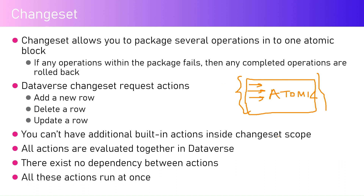You can't have additional built-in actions inside the Change Set scope — all actions are evaluated together in Dataverse. There is no dependency between the actions; all the actions are independent with no linkages. All actions operate independently and run at once, so there is no sequential flow of execution. Change Set is the only feature available within the Dataverse control with this functionality.